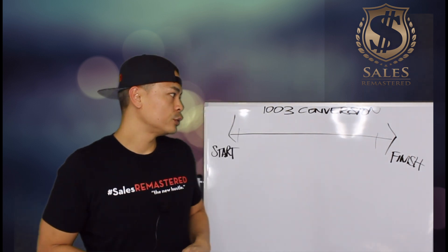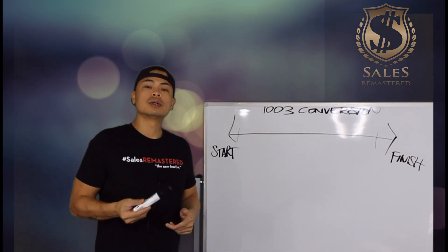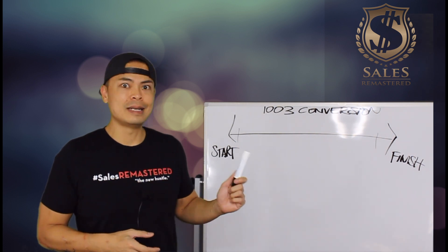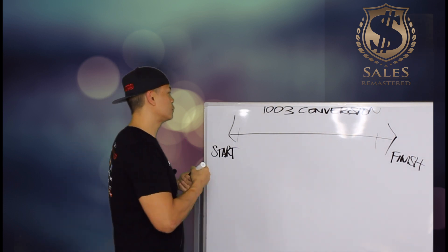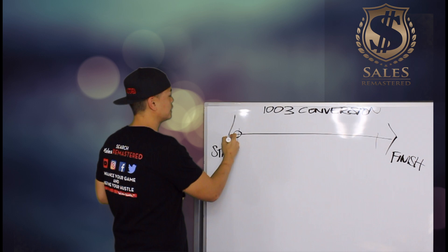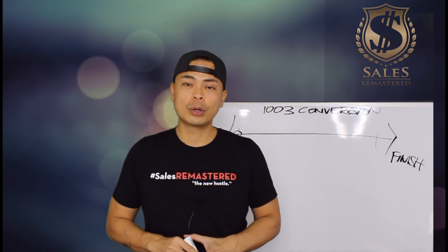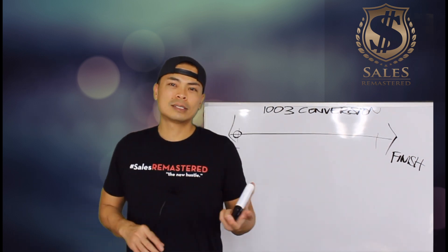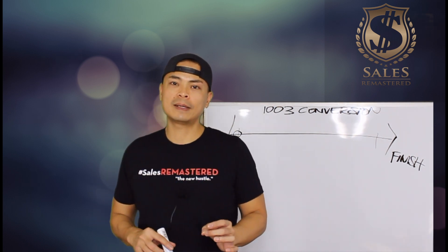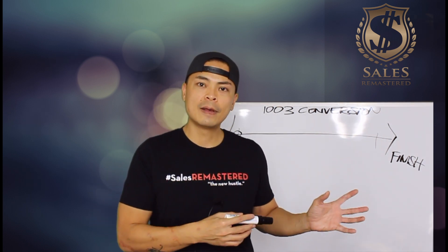What I want to do is introduce you to the reason why most loan officers fail at the very beginning of the initial application — it's because they go into objections way too early. They go into pricing. In other words, they're negotiating.